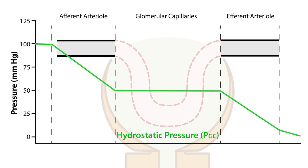Now, watch what happens to the hydrostatic pressure along the glomerular capillaries as the blood pressure increases from 100 to 125 millimeters of mercury. Notice how it does not change across the glomerular capillaries. That's because the afferent arterial applied resistance in response to the increased blood pressure.